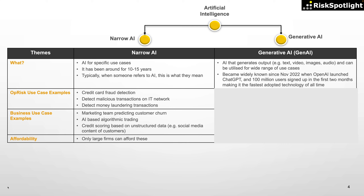The term generative AI became widely known in November 2022 when OpenAI launched ChatGPT and it signed up 100 million users in the first two months. This made it the fastest adopted technology of all time ever created by humans — faster than mobile phones, social media, and even the internet.